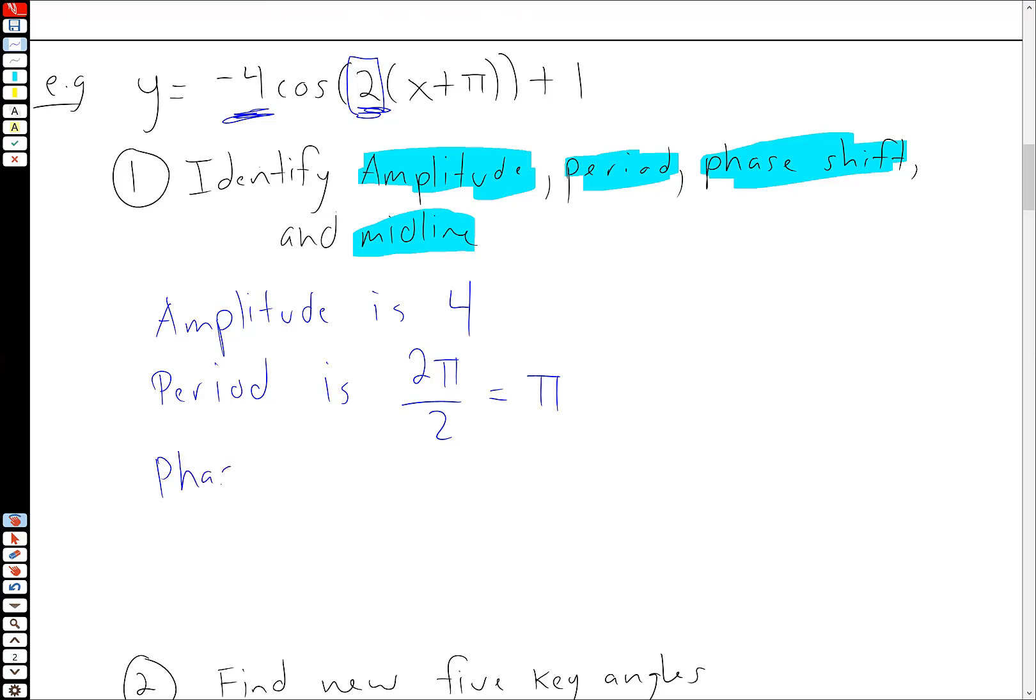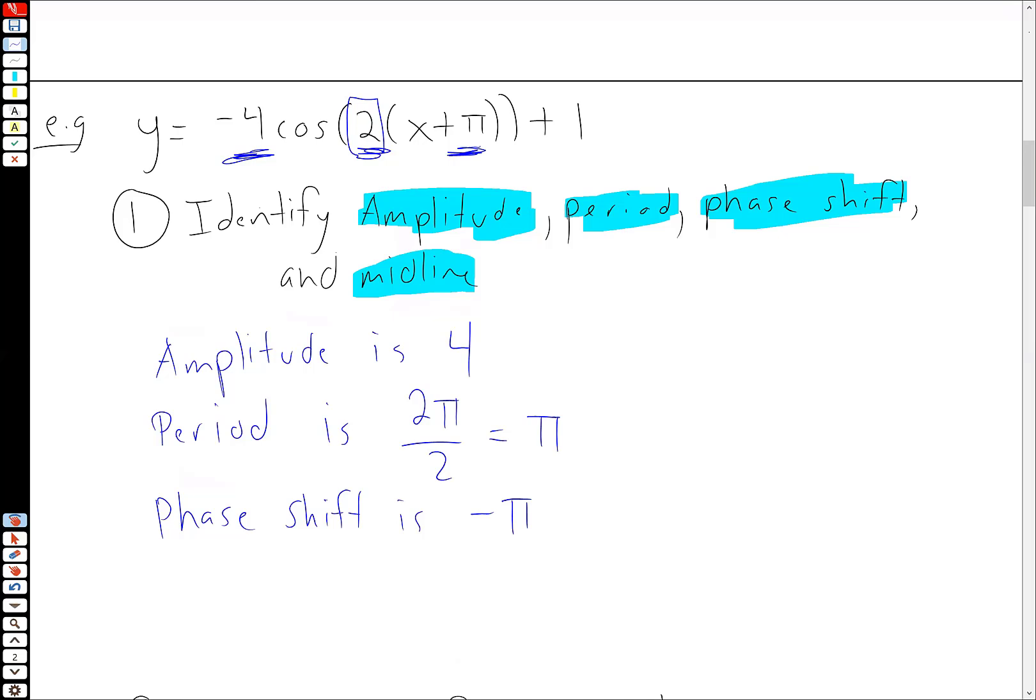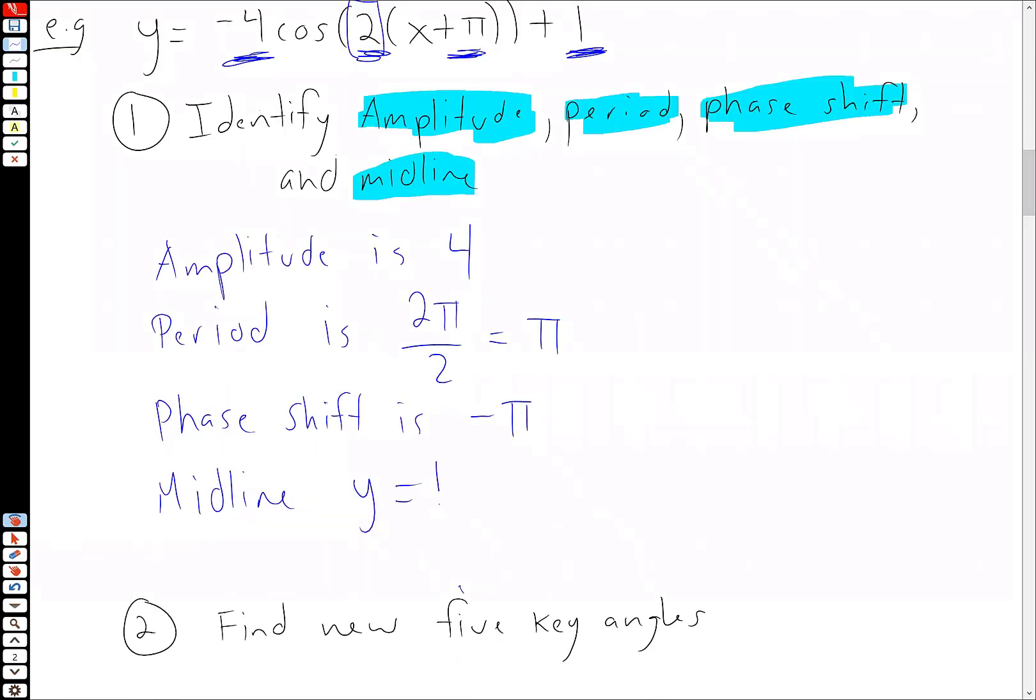The phase shift, now you want to be careful here. Shift is, so it's not plus π. It's actually minus π. And that's coming from, remember, what do our sinusoidal curves look like? They look like X minus H. So since we have a plus here, we want the opposite. And then finally, the midline is given by the number on the outside here, on the very outside. So the midline in this case is Y equals 1.